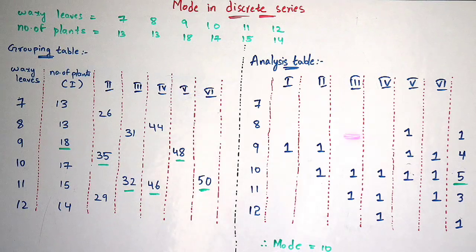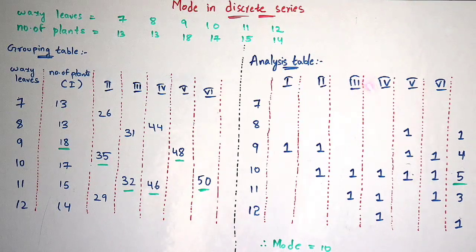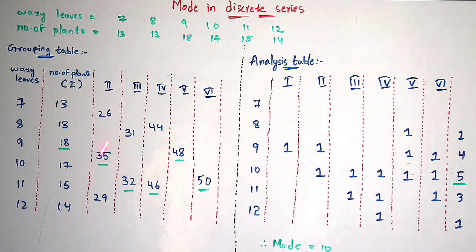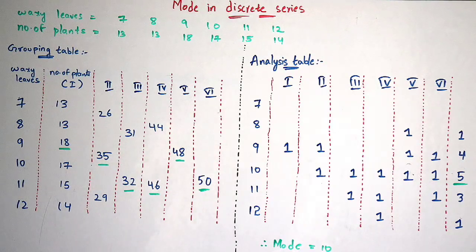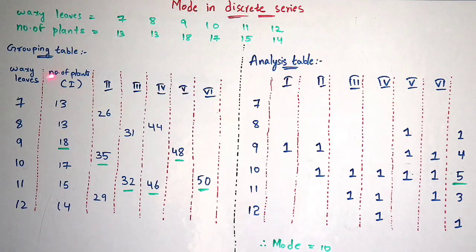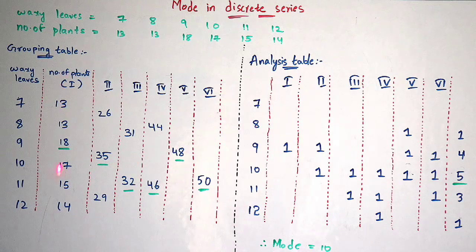Coming to the analysis table. Before entering into the analysis table, you first mark the highest number in each column of the grouping table. In the first column, 18 is the highest number - mark that. In the second column, 35 is the highest number - mark that. In the third column, 32 is the highest number - mark it. In the fourth, fifth, and sixth columns, 46, 48, and 50 are the highest numbers respectively. Mark all highest numbers. In the analysis table, the first column frequencies are written as they are, and 18 is the highest, so we write 1.